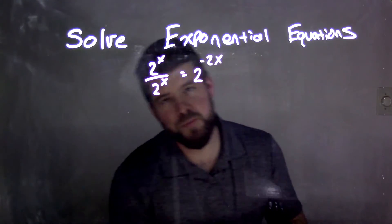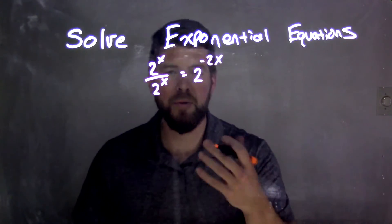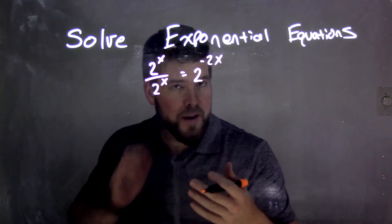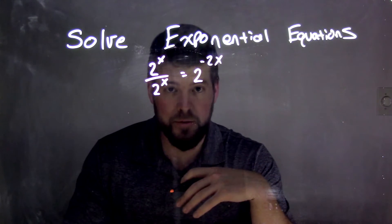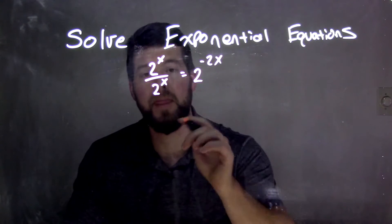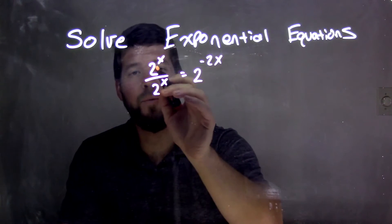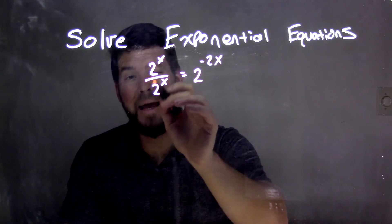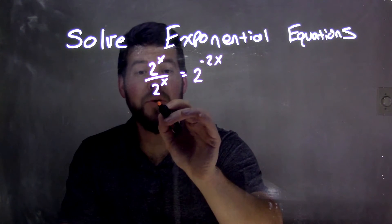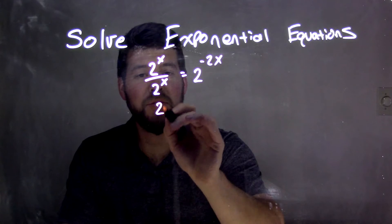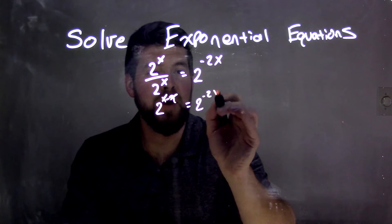Now, there's many ways to solve this problem. We can see 2 to the x power over 2 to the x power, divide them equal to 1, and then go from there, but I'm going to try to use our exponent rules, with bases with division. If we have division of two parts here with the same base, same base, we can subtract our exponents. So we can rewrite that to be 2 to the x minus x equals 2 to the negative 2x.